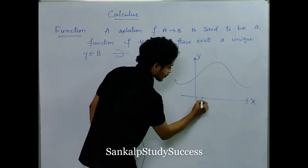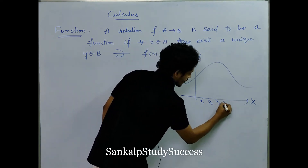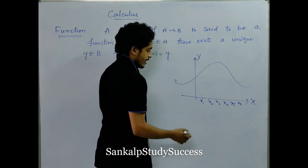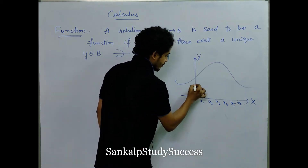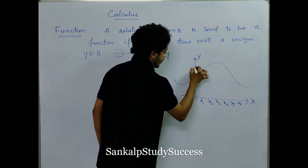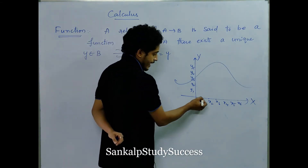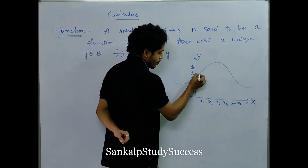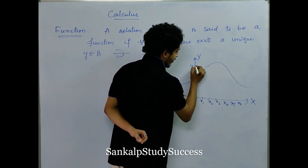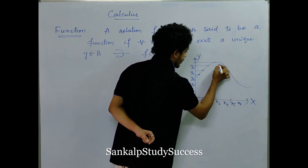Suppose I have values x1, x2, x3, x4, x5, x6. At the same time, we have y1, y2, y3, y4, y5. At x1 I have a value, at x2 I have a value, at x3 I have a value — that value is equal. At x4 I have some values.